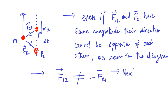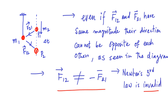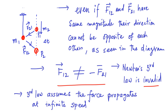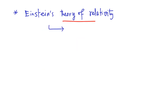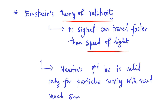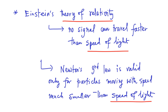In such a situation, Newton's third law of motion is invalid. We can restore Newton's third law only if the elapsed time delta T is zero — in other words, the third law assumes the force propagates at infinite speed. However, from Einstein's theory of relativity, we know that no signal can travel faster than the speed of light. Therefore, Newton's third law is valid only for particles moving with speed much smaller than the speed of light.